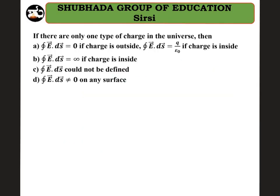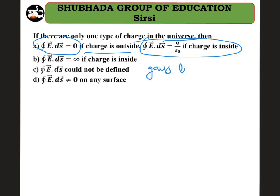Moving to the next question: if there is only one type of charge in the universe, then which of the following is correct? The closed integral of E·ds = 0 if the charge is outside, and the closed integral of E·ds = Q/ε₀ if the charge is inside. This is a question on Gauss's law.